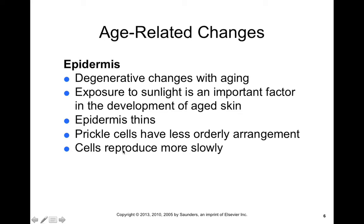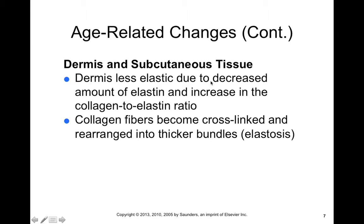The dermis is less elastic in the elderly because of less elastin, and there's an increase in the collagen-to-elastin ratio so that it loses elasticity and becomes more rigid. Collagen fibers become cross-linked and rearranged in thicker bundles — we call this elastosis — which gives skin less of a smooth appearance and a more wrinkled one.